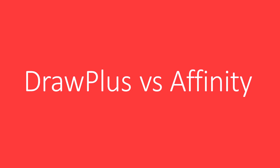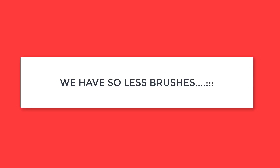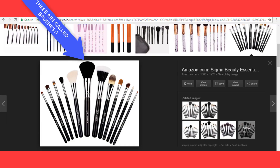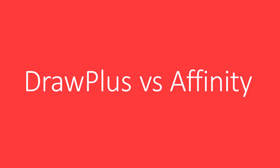The second thing I see most missing in Affinity is the availability of many brushes that DrawPlus had to offer. DrawPlus had an abundance of brushes which could be used just like Corel Painter — you would often use it to make paintings and various other things. Now we just have a handful of brushes in Affinity.